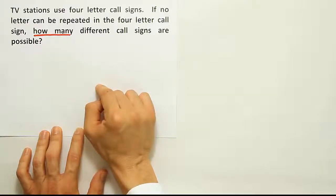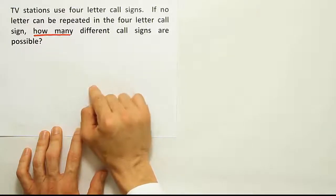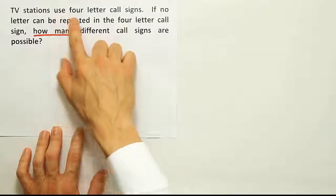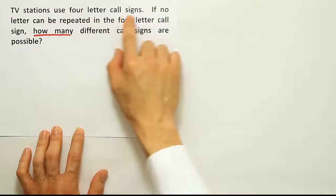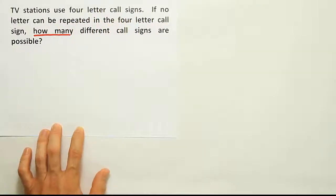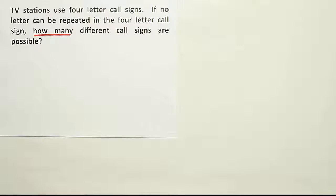But in a combination, you can change the order and it's still the same thing. Because in combinations, order does not matter. So we can tell that these TV four-letter call signs are not found by using combinations because if that were the case, then order would not matter. But order clearly does matter here.